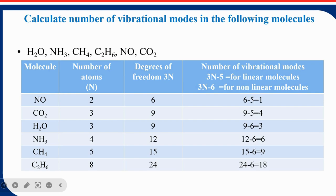For NO: it has 2 atoms, so degree of freedom is 3N = 6. It is a linear diatomic molecule, so vibrational modes = 6 − 5 = 1. For CO2: it is also linear (SP hybridization), with 3 atoms, so degree of freedom = 9, and vibrational modes = 9 − 5 = 4, giving 2 stretching vibrations and 2 bending vibrations.